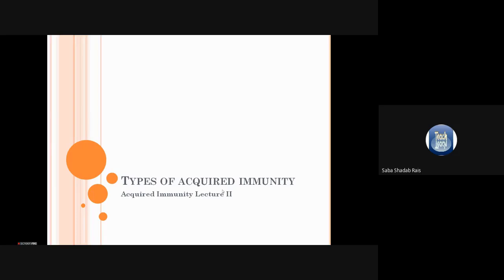Let us revise the definition of acquired immunity. Acquired immunity is our body adapting an immune response because of the exposure to any type of disease-causing organism. Acquired immunity is also called adaptive immunity because we adapt it during our lifetime.